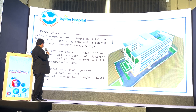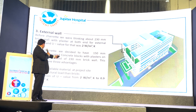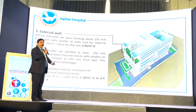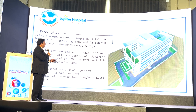There is an energy saving. You can see that the U-value has reduced from 2 W per metre square per Kelvin to 0.9 W per metre square per Kelvin. So from 2 to 0.9 it has come down.